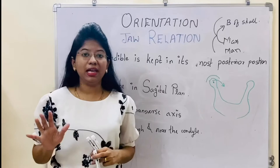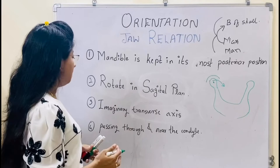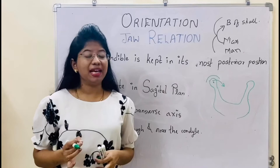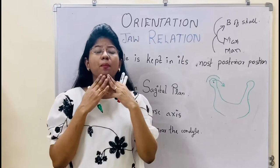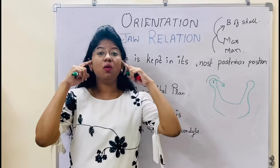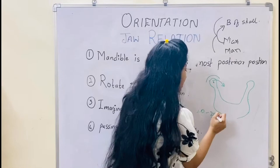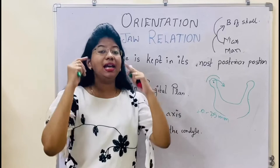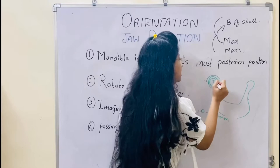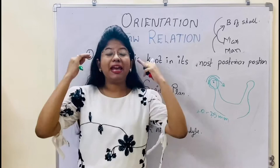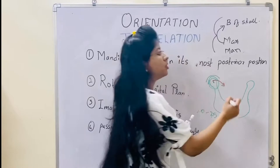So it can rotate in the sagittal plane around an imaginary transverse axis. What do we mean by imaginary transverse axis? Whenever there is movement — for example, when I am opening my mouth, you can try opening your mouth — you can see your condyles are moving. But when opening by 20 to 25 mm, which is called hinge movement, your condyle will rotate at its own place. But when I open wide more than 25 mm, my condyle will shift forward — that is, it will change its position, it will move bodily. That is the translation motion.